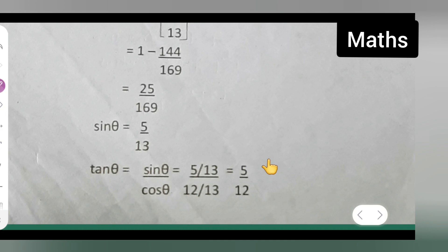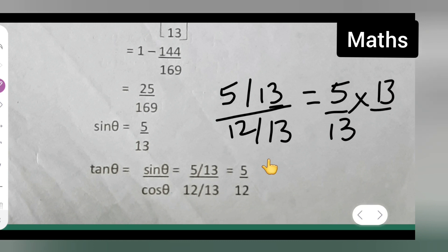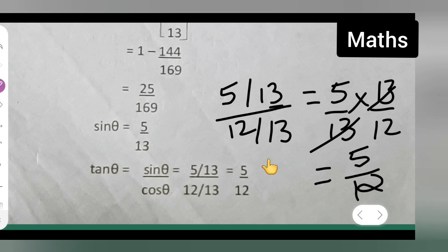So you have 5 upon 13 divided by 12 upon 13, which equals 5 upon 13 multiplied by 13 upon 12. The 13s cancel out, and what you get is 5 upon 12. So tan theta is equal to 5 upon 12.